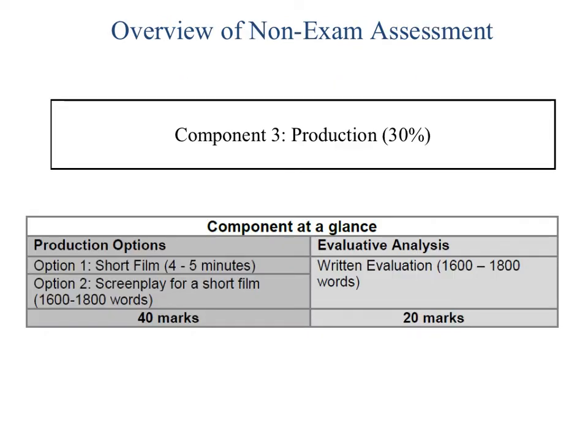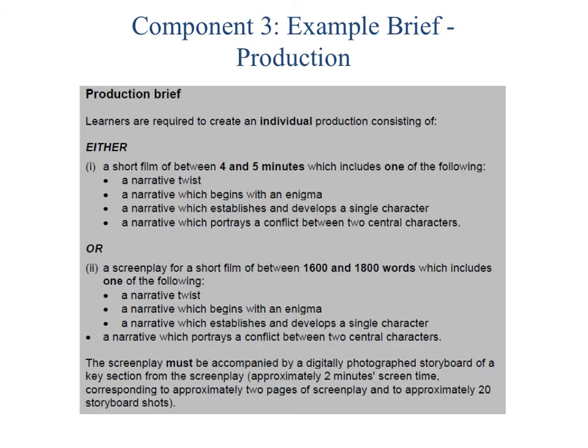Finally, Component 3 is a non-exam assessment — essentially a piece of coursework. You will be given a brief and two production options. Option 1 is to create a short film, four to five minutes long. Option 2 is to write a screenplay for a short film, which should be 1,600 to 1,800 words long. For either option, you have to provide a written evaluation explaining your filmmaker's choices. You can see here an example of a production brief given to us by the exam board, which will help you to plan and prepare your production.